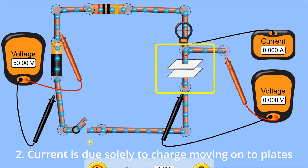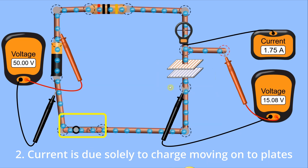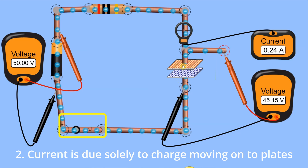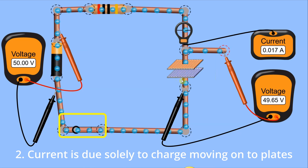The second thing to consider is that current is due solely to charge moving onto the plates. Electrons move onto the bottom plate, causing a buildup of negative charge, and push electrons away from the top plate, causing a buildup of positive charge. There's actually no current flowing between those two plates. Current coming into the plates builds up the negative charge, and current coming out is the electrons flowing away — those electrons were already on that top plate. No current flows between the plates.